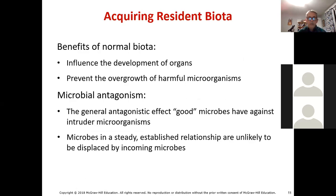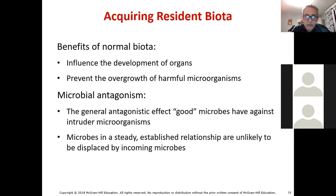Benefits of our normal microbiota include influencing the development of our organs and preventing the overgrowth of harmful microorganisms. Microbial antagonism is the general antagonistic effect that beneficial microbes have against intruder microbes. Once microbes have become established as part of your biome, they guard that territory and try to exclude any other microbes from it.